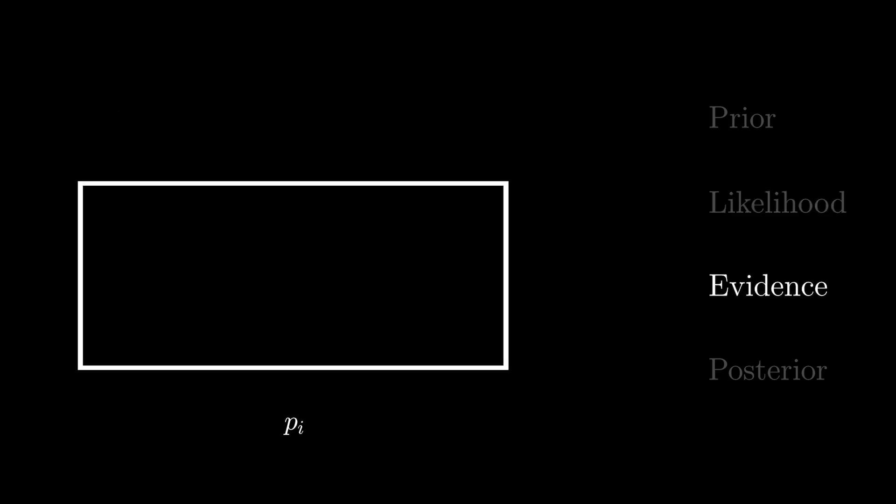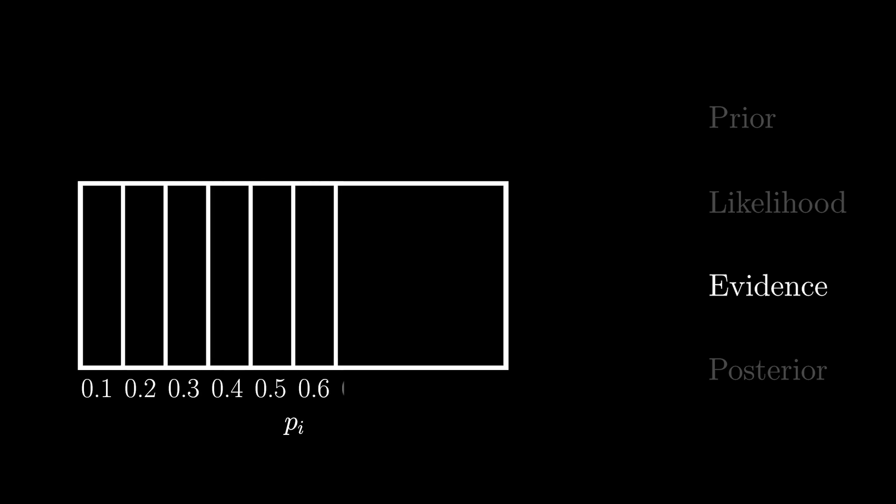We have initially considered 10 possible values of p, each with a 10% chance of occurrence, so let's draw this visually. Now, before we solve for the total chance of our evidence, let's answer the following question.